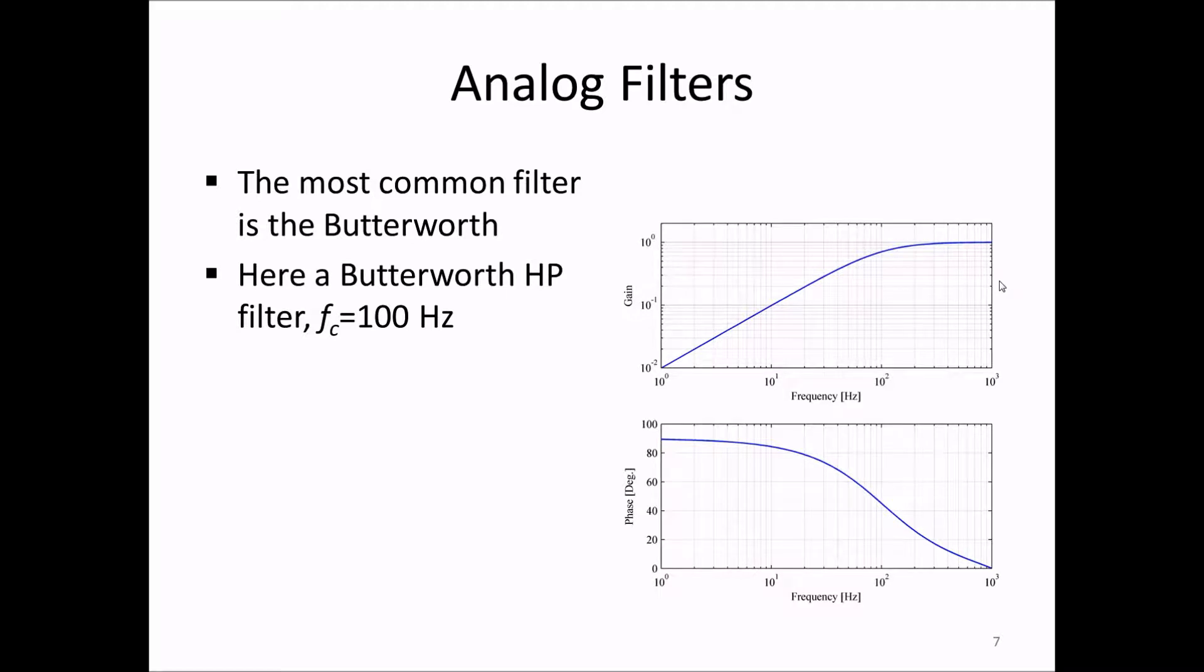Here you see a common analog filter, the so-called Butterworth filter. There are many different standardized characteristics of analog filters, and these often have different names after people who designed those filters. We will only look at the Butterworth filter here because it's the most important and common filter. This filter often gives a good compromise between amplitude or gain and phase characteristics. In the plot here we see a first order Butterworth high pass filter with a cutoff frequency of 100 hertz.